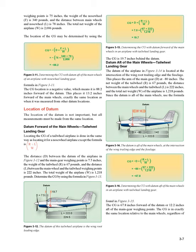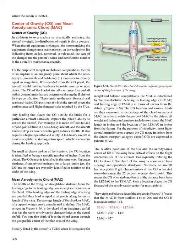Datum Aft of the Main Wheels — Tailwheel Landing Gear: The datum of the airplane in figure 3-14 is located at the intersection of the wing root trailing edge and the fuselage, placing the arm of the main gear (D) at minus 80 inches. The net weight of the tail wheel (R) is 67 pounds, the distance between the main wheels and the tail wheel (L) is 222 inches, and the total net weight (W) is 1,218 pounds. Since the datum is aft of the main wheels, use the formula in figure 3-15. The CG is 67.8 inches forward of the datum, or 12.2 inches aft of the main gear weighing points. The CG is in exactly the same location relative to the main wheels regardless of where the datum is located.